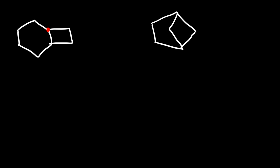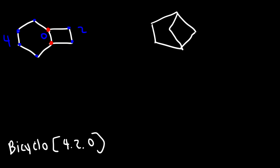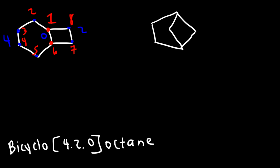So let's identify the bridgehead carbons. We have four carbon atoms on the left side. On the right side there are two carbon atoms. And in the middle, there are no carbon atoms between the two bridgehead carbons. So this is going to be called bicyclo[4.2.0], and we have a total of eight carbon atoms, so octane. To number it, we're going to start with the bridgehead carbon and count towards the larger ring, then towards the smaller ring. There's a total of eight carbons in that example.